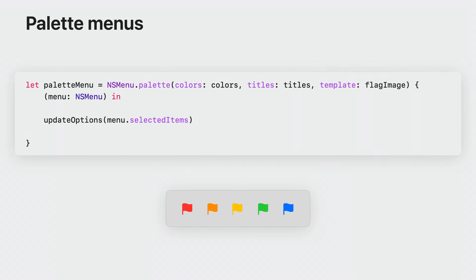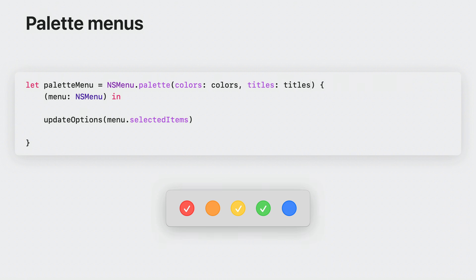NSMenu also provides a convenience function to create common palette menus. The colors array determines the number of palette items and their tint. Titles are used for accessibility, so make sure you add them. The optional template parameter specifies which template image to use for tinting, for example the flag symbol image. If you don't specify a template, AppKit will default to filled circles. There is also an optional closure parameter, called any time the user toggles a menu item, from which you can get the selectedItems property.